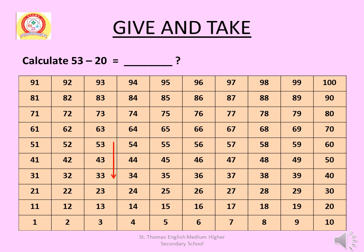Calculate 53 minus 20. 20 means 2 rows, and minus means subtraction. Start from 53 and move 2 rows down to 33. That means 53 minus 20 equals 33, shown with red arrows.